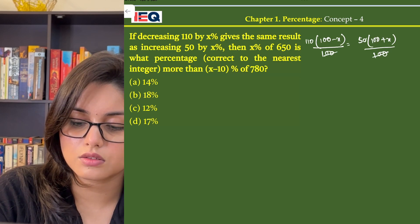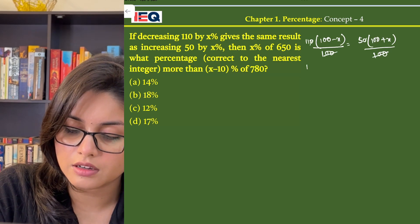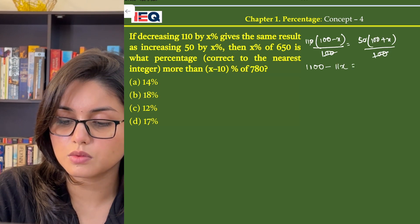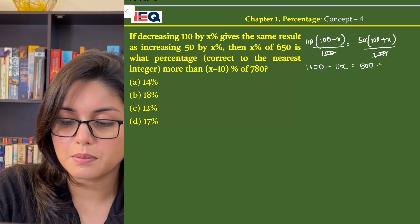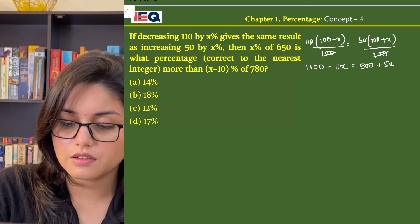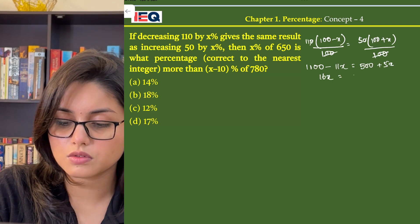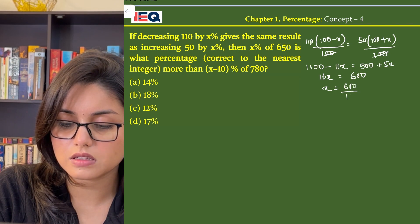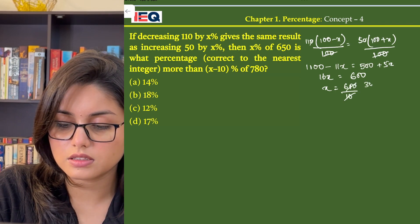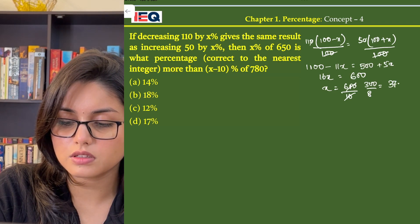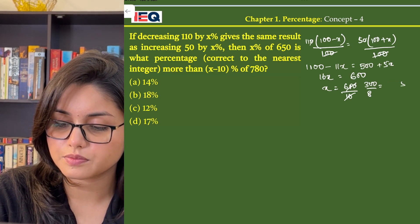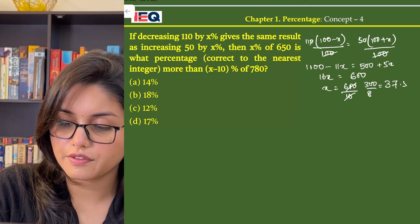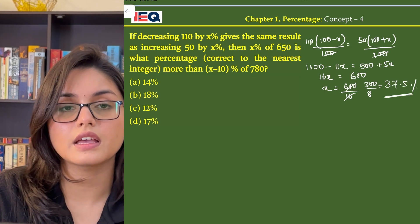Now 100 gets cancelled, so we get 1100 minus 11x equals 500 plus 5x. Then we get 16x equals 600, and x equals 600/16, or 300/8, that is 37.5%. So this is the value of x.